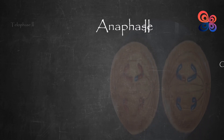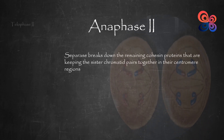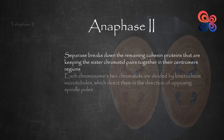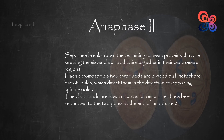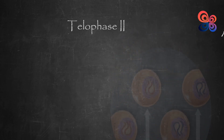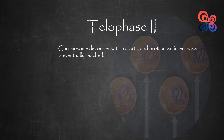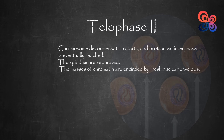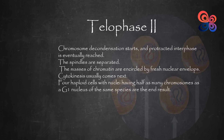During anaphase 2, separase breaks down the remaining cohesin proteins keeping the sister chromatid pairs together at their centromere regions. Each chromosome's two chromatids are divided by kinetochore microtubules, which direct them toward opposing spindle poles. The chromatids — now known as chromosomes — have been separated to the two poles at the end of anaphase 2. Telophase 2 is the final stage: chromosome decondensation starts, the spindles are separated, and masses of chromatin are encircled by fresh nuclear envelopes. Cytokinesis usually follows, resulting in 4 haploid cells with nuclei having half as many chromosomes as a G1 nucleus.